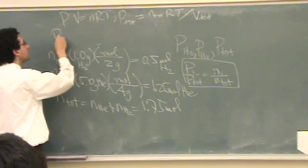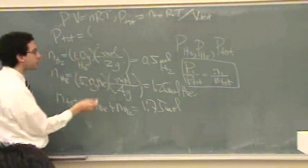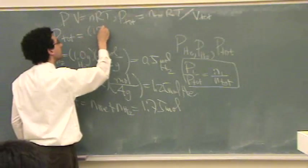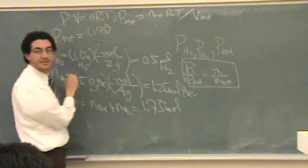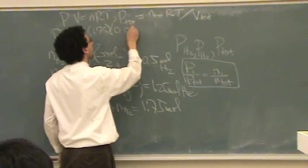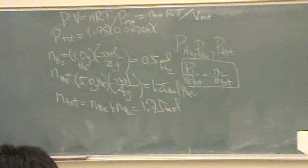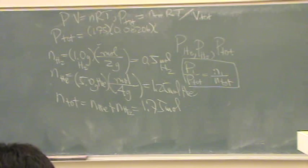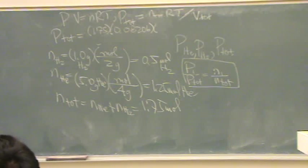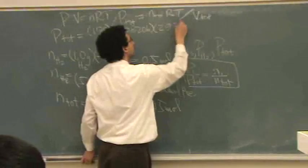So, P total equals, total moles, 1.75. We got that, good. R, that's always a constant, we always have an R. 0.08206 liters atmospheres per mole kelvin. Temperature, what did I write down, did it say 20 degrees C? Yeah, 20 degrees C, so I add 273 to that. 293 kelvin.